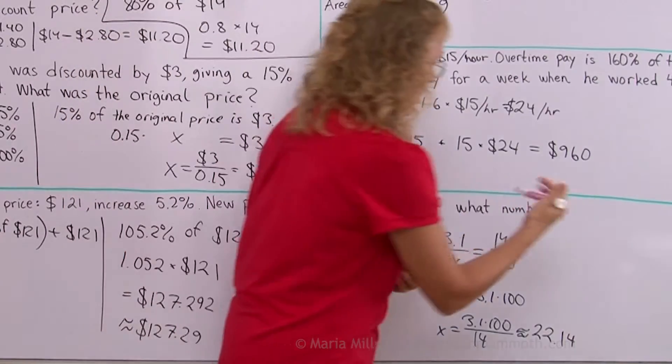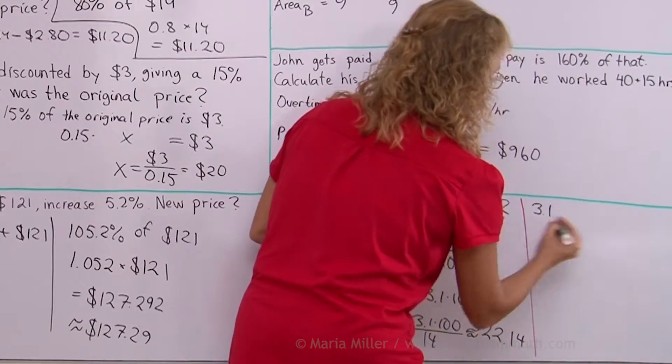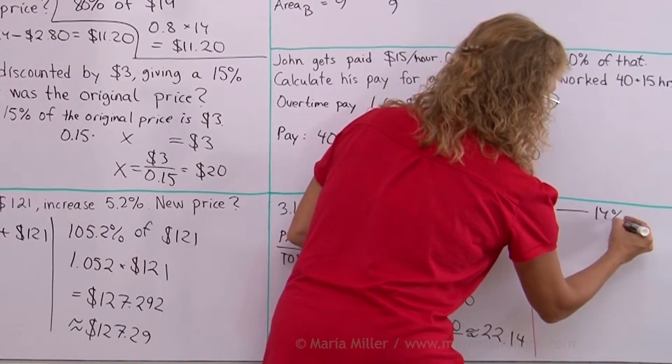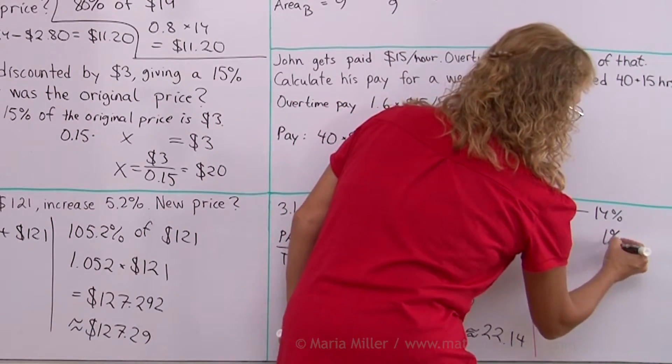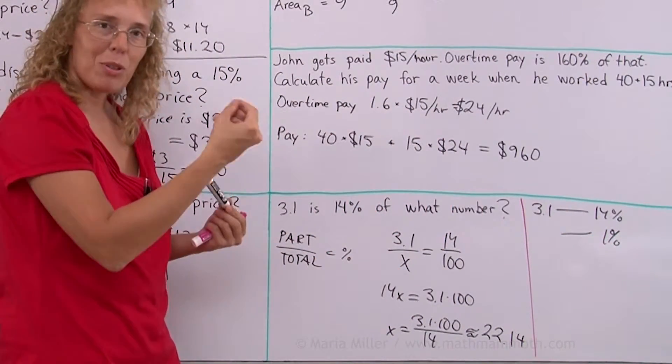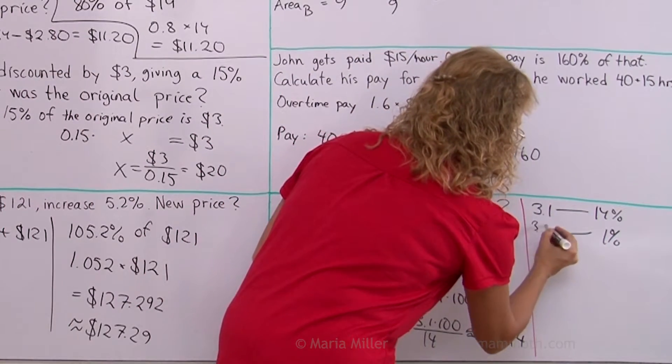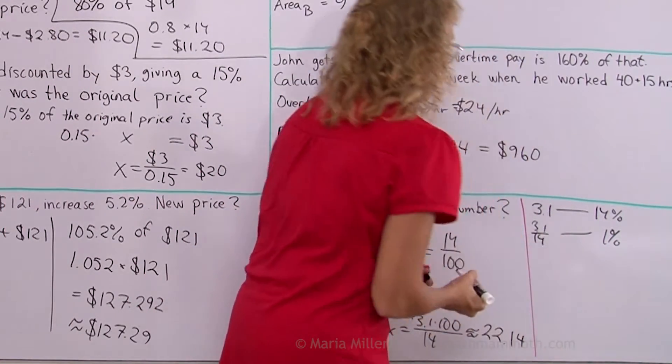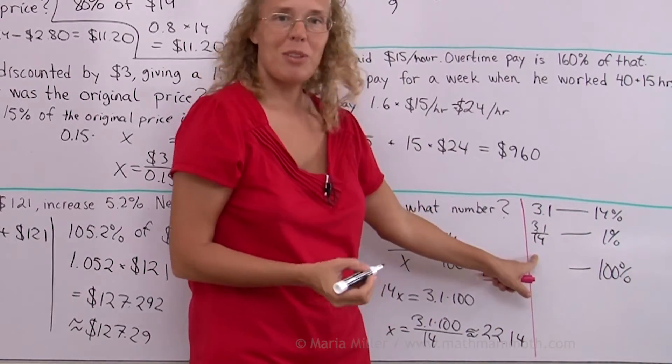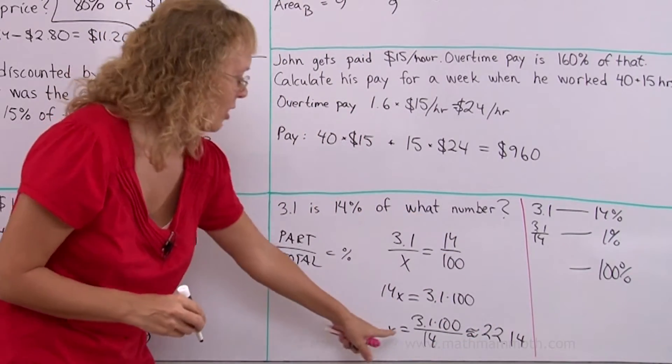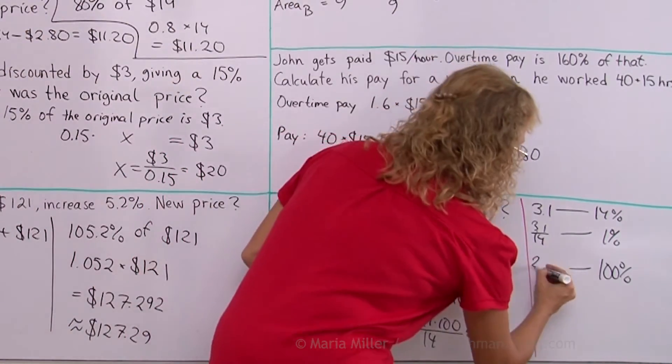Another way to solve this is this way. You've seen this already. 3.1 corresponds with the 14%. And now you figure out 1%. 1% would be what? Well, it would be 3.1 divided by 14. Right. Whatever that is. And then 100%. What would that be? It would be this number times 100. Which is exactly what we already calculated here. It's gonna be 22.14 approximately.